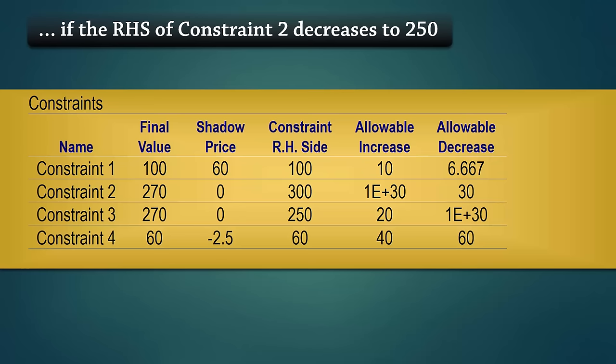And what will happen if the right hand side of Constraint 2 decreases to 250? Notice here that the allowable decrease for Constraint 2 is 30. The current value is 300. So decreasing it to 250 is a proposed decrease of 50. Since the proposed decrease exceeds the allowable decrease, the shadow price is no longer valid. As a result, we cannot tell what will happen to profit based on this output. We need to re-solve the model.